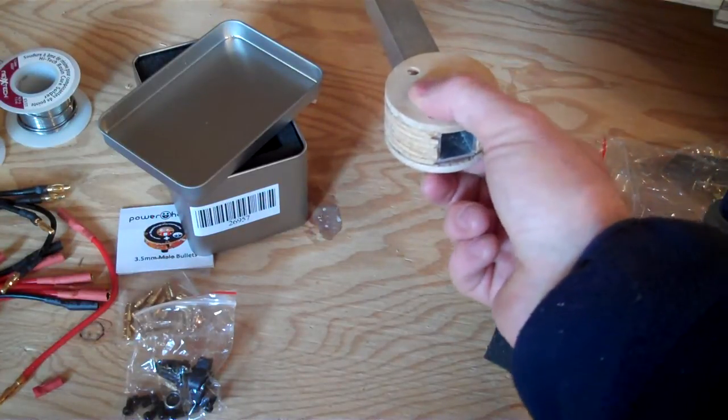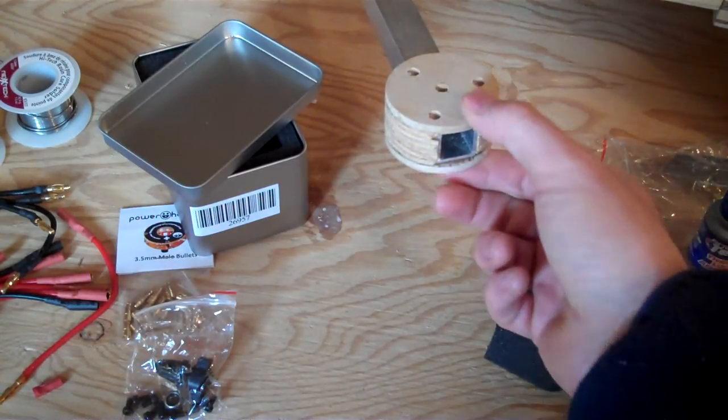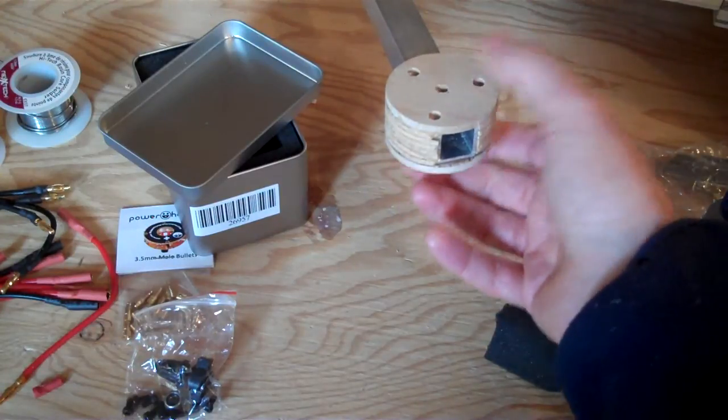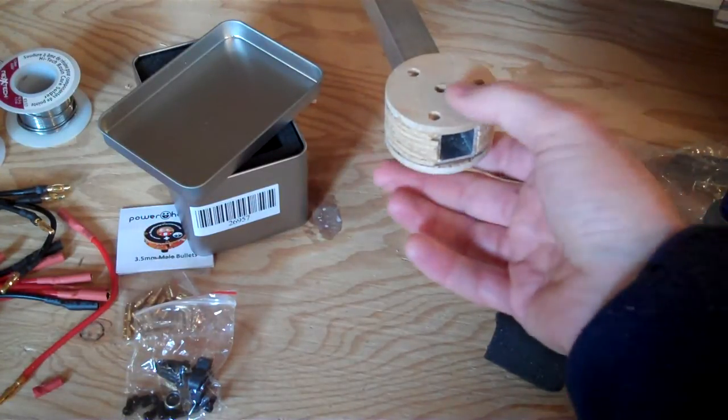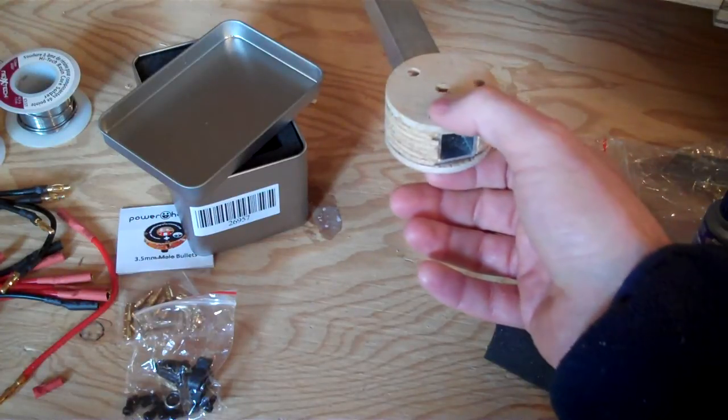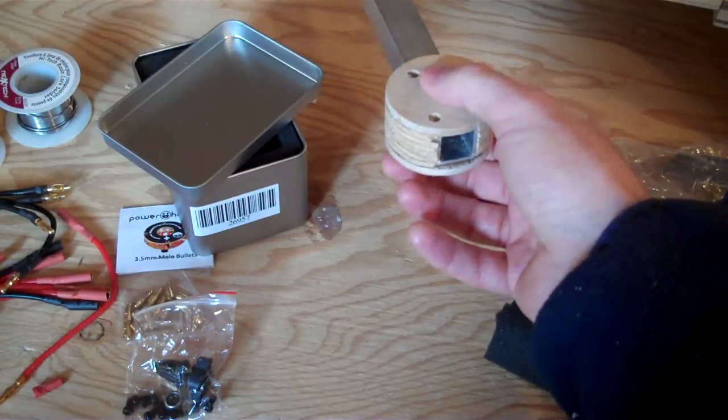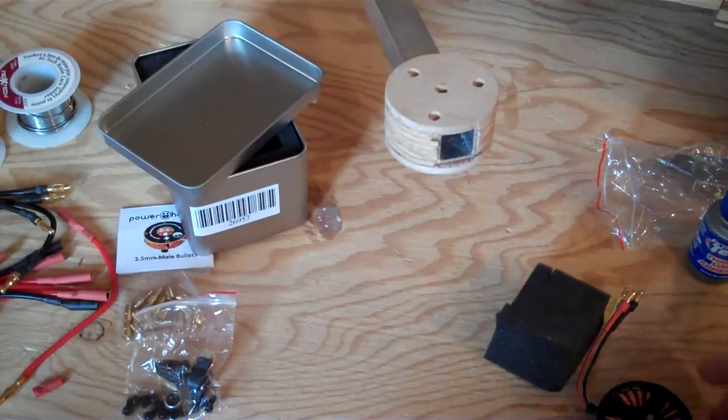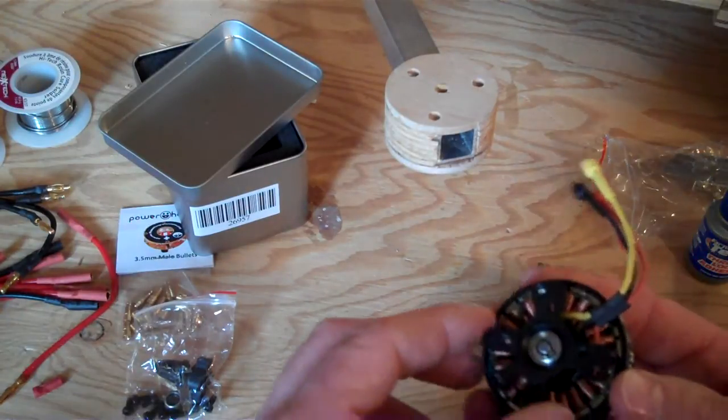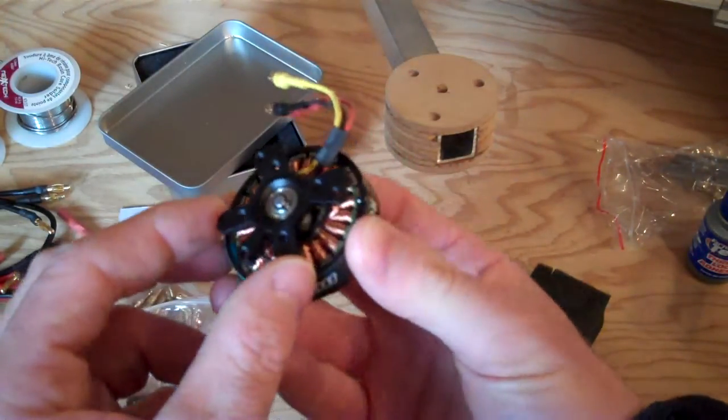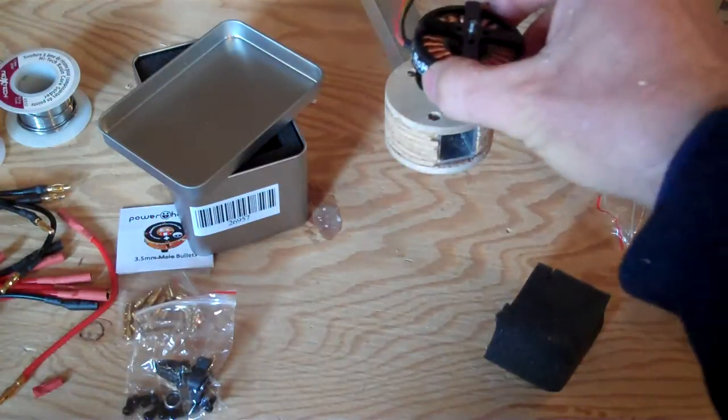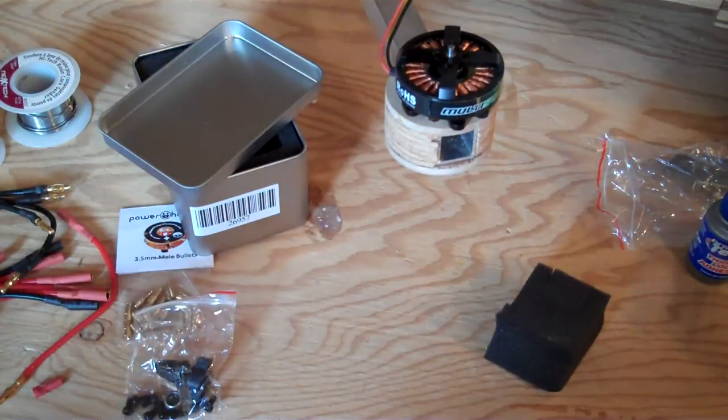That's definitely not going anywhere. Plus, from what I've read in forums, wood is supposed to be a pretty good vibration absorber. Now to mount this motor onto the motor mount I made, you'll need a piece of aluminum.